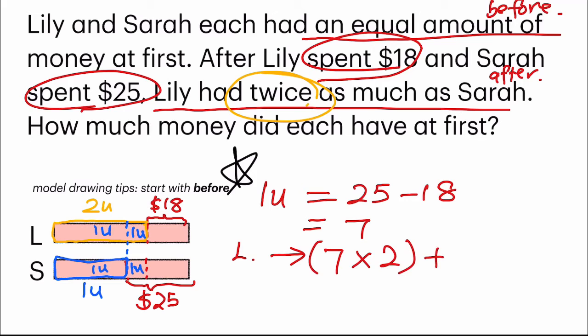2 units will be 7 times 2. And then I need to add the $18 that she had spent. So 7 times 2 gives me 14. 14 plus 18 gives me 32.